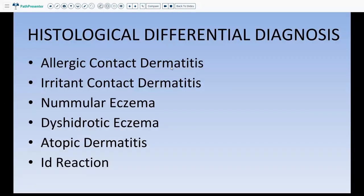Spongiosis can be caused by many different things, but the common entities seen in routine practice are: allergic contact dermatitis, irritant contact dermatitis (something irritating the skin from outside), nummular eczema presenting as coin-shaped plaque-like lesions, dyshidrotic eczema which is typically limited to the palms and soles (the acral site), atopic dermatitis in kids, and the id reaction — an eczematous process occurring as a reaction to a rash somewhere else on the body.